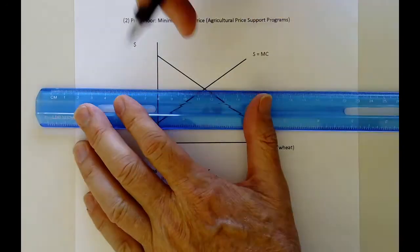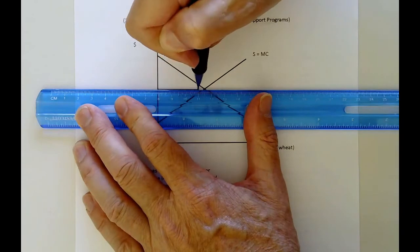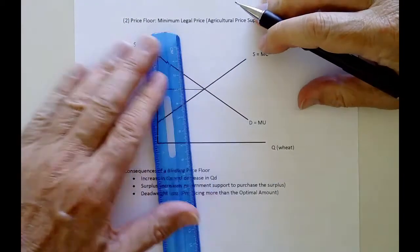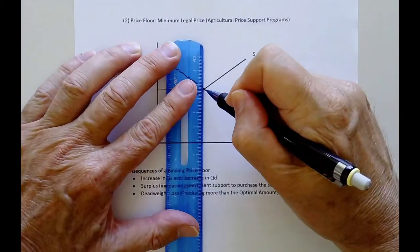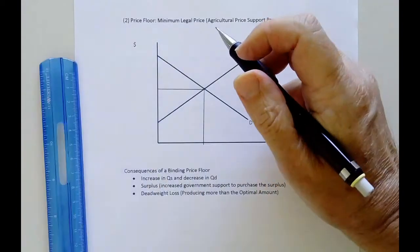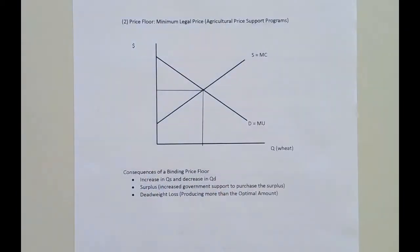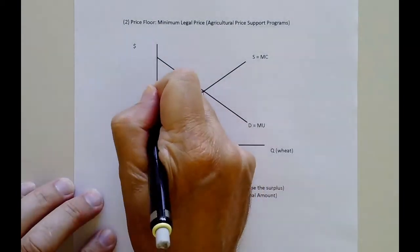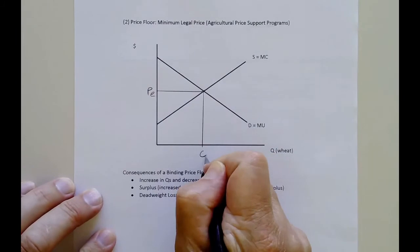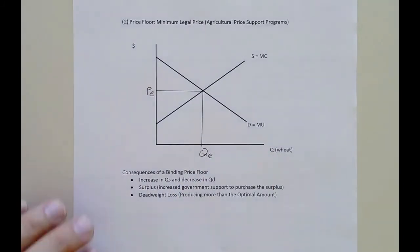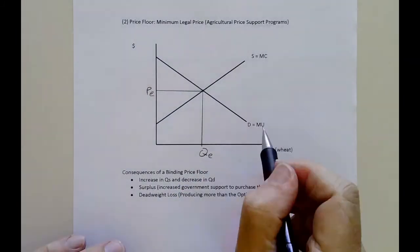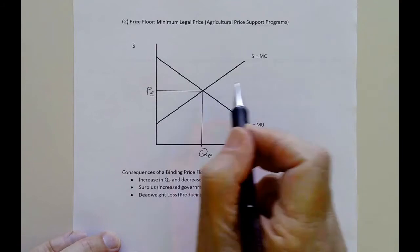So again, let's go back to equilibrium. Equilibrium price, quantity. I'd have mentioned earlier the price ceiling, but because this is also where our marginal utility hits our marginal cost, this equilibrium is also the optimal.